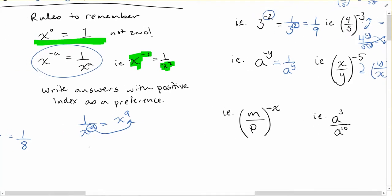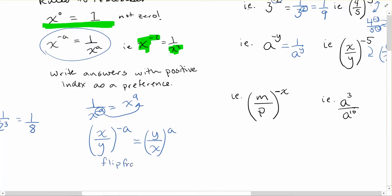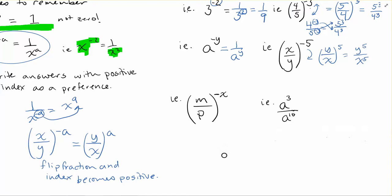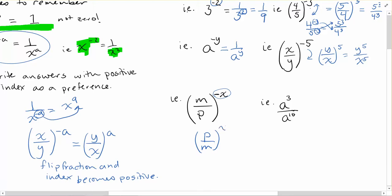Adding to our rules: if you have (x/y) to a negative power, that becomes (y/x) to the positive power — you flip the fraction and the index becomes positive. For example, (m/p) to the power of negative x: it's a negative power with a fraction, so flip it to (p/m) to the positive x, which can be written as p to the x over m to the x.